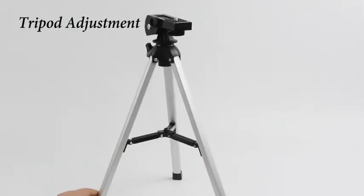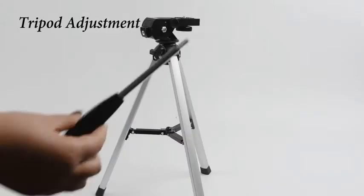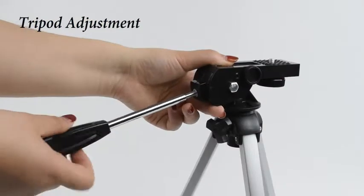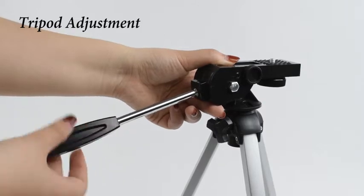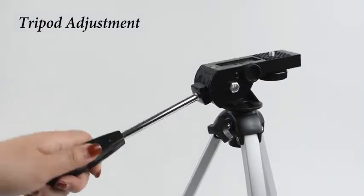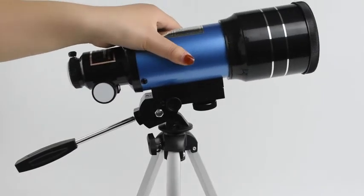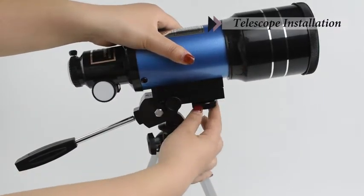Extend the tripod leg to the desired height and fasten the tripod adjustment buckle. Place the telescope tube on the tripod and rotate the knob to fix it.